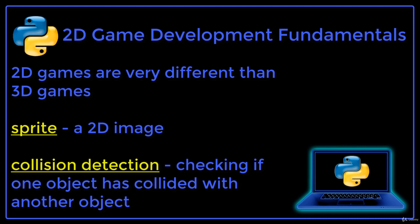All of the game animations and movement is created by rapidly showing graphics of characters in different poses to produce the illusion of movement. The environment, characters, background, enemies, and items are all 2D art.